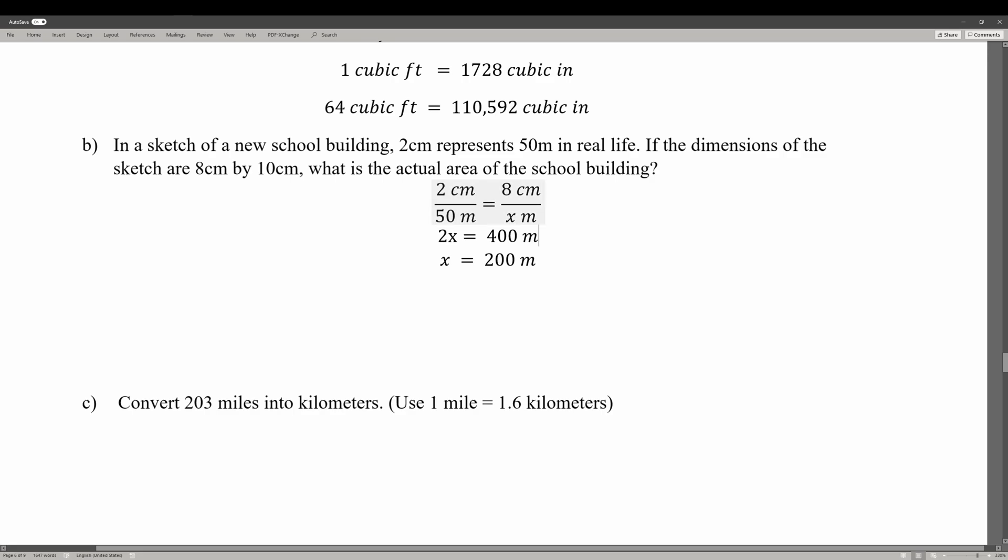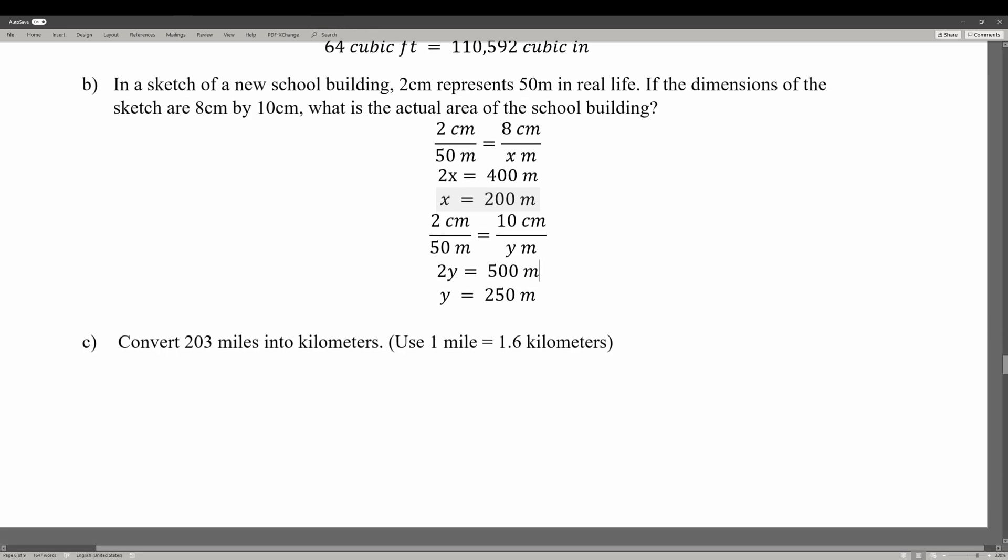Let's find the other side. We do the same thing: 2 centimeters over 50 meters equals 10 centimeters over y meters. Then we cross-multiply again. 2y equals 500 meters, and finally y equals 250 meters.